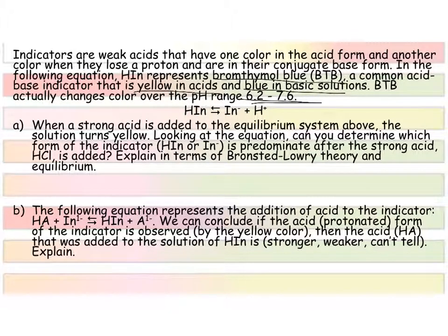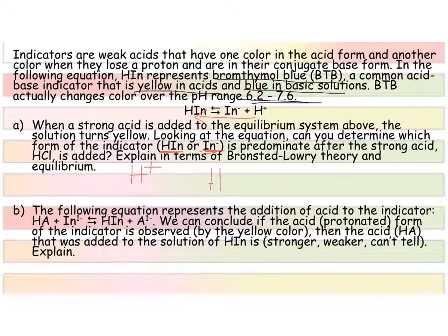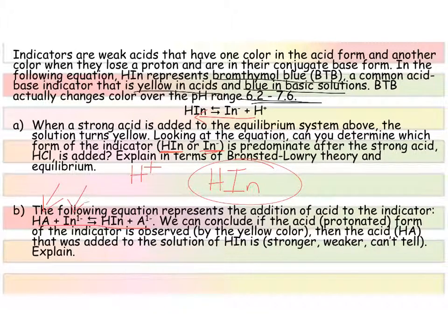When you add a strong acid, the solution turns yellow. Looking at our formula, we need to decide which form of the indicator — HIn or In⁻ — is the predominant form after the strong acid is added. When you add a strong acid, it produces a bunch of H⁺ ions in solution, which causes the equilibrium to shift toward HIn. So HIn is going to be our predominant form. Here again is a formula for our acid, where the acid is reacting with the indicator and making the indicator and some of the conjugate base of that weak acid.